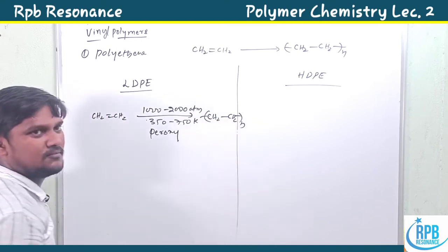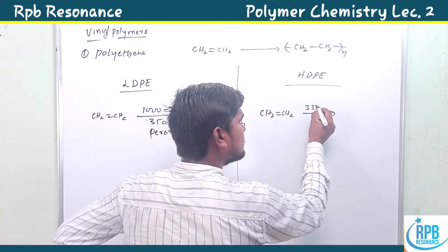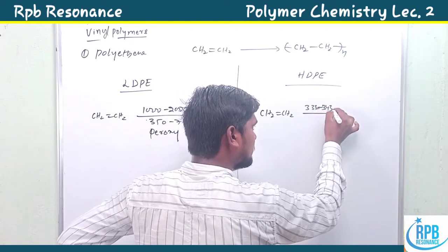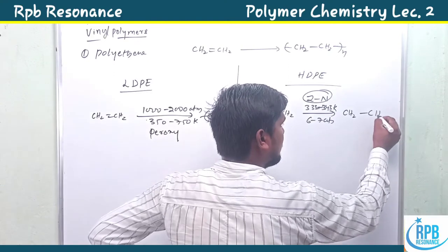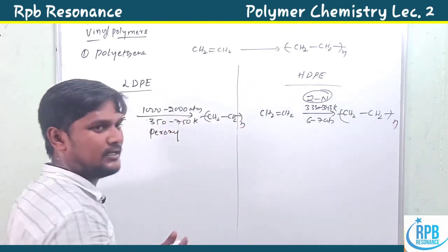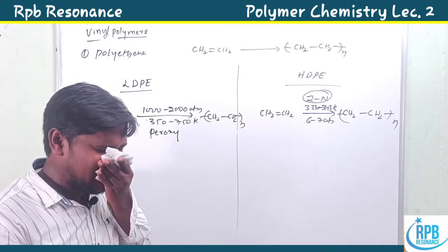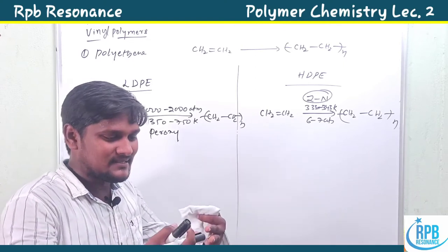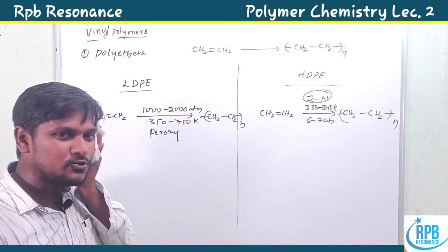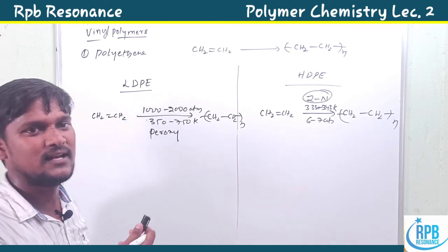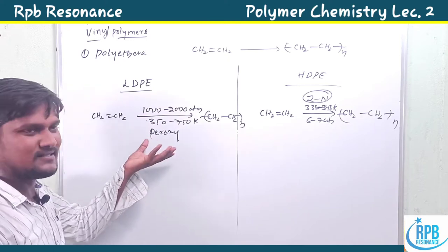For HDPE, CH₂=CH₂ is polymerized at 333–343 K temperature and 6–7 atmospheres pressure in the presence of Ziegler-Natta catalyst. Both cases produce polythene, but due to differences in structural close packing, one has high density and the other low density — hence classified as low density and high density polymers.